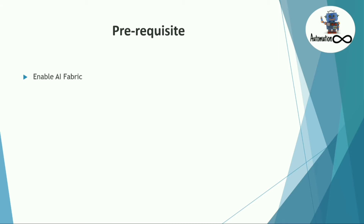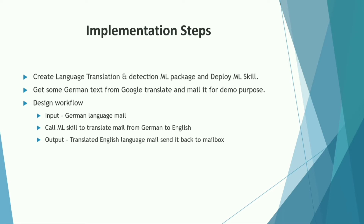If you have already enabled your AI Fabric, let's get started without any delay. To implement the workflow, first we are going to create the Language Detection and Language Translation ML packages and deploy our ML skills. After that, we'll get some German text from Google Translate and mail it to our Outlook for demo purposes. Then we'll design the workflow in UiPath Studio, call the ML skill to translate the email from German to English, and send the translated email back to our mailbox.